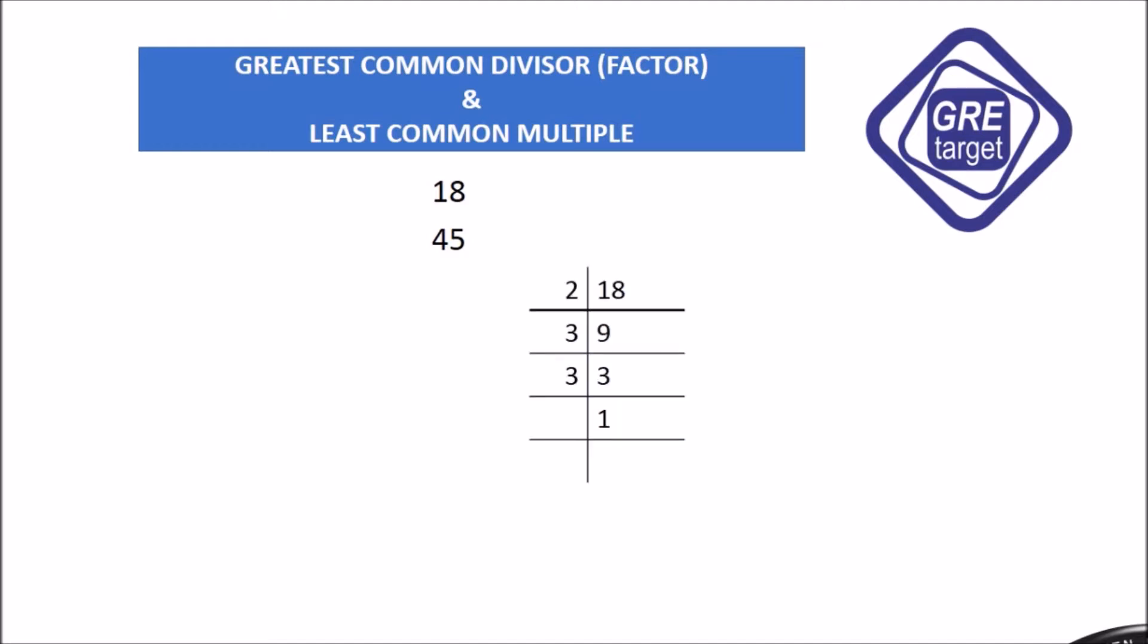We start with the number 18. It is divided by 2, so we get 9. 9 is not divided by 2, therefore it is divided by 3. 3 into 3 is 9, and we all know that 3 ones are 3.